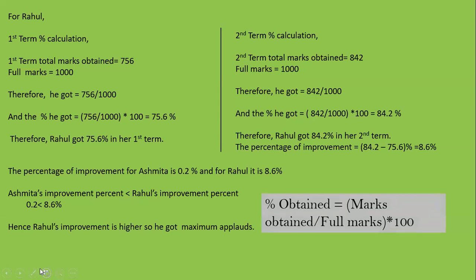The formula used here is: percentage obtained equals marks obtained by full marks, into 100. This is another way to convert a fraction into a percentage by multiplying by 100. For example, 27 by 40 into 100 gives the percentage — marks obtained are 27 and full marks are 40.